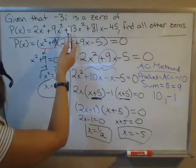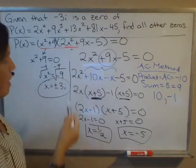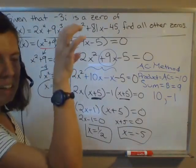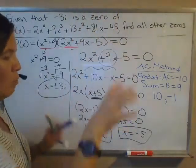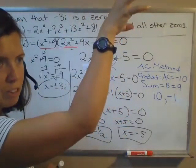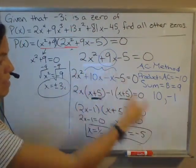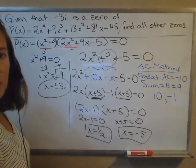We were given kind of a toehold, a bit of a boost by the fact that -3i is a zero. I picture it like you're rock climbing, and that gave you something to grab onto to hoist yourself up, this -3i. But once we had that, everything's completely by hand. We find all the zeros.